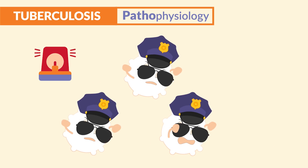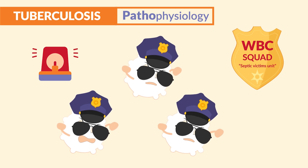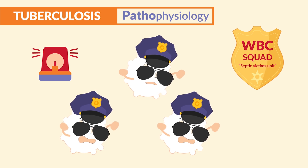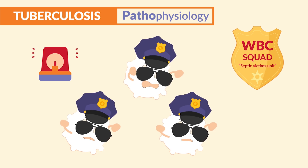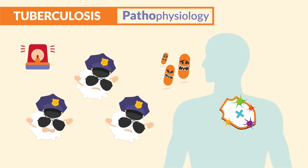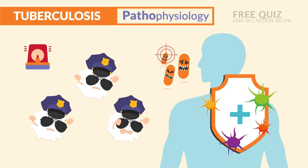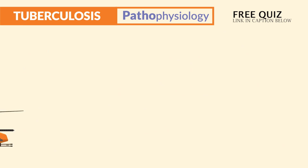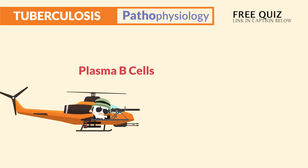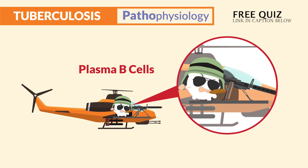The WBCs — white blood cells — which I call the WBC elite squad septic victims unit, they respond by kicking out the infection to protect the body from invaders. So naturally, plasma B cells of the WBC squad come flying in to help identify the invaders.